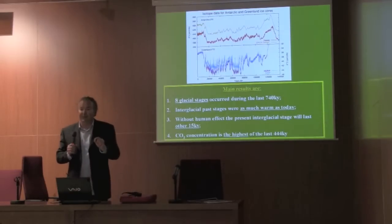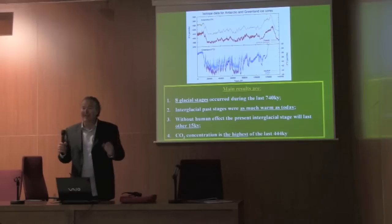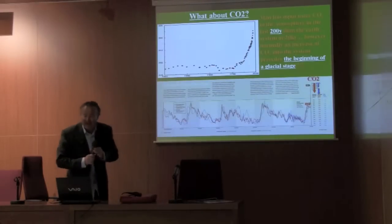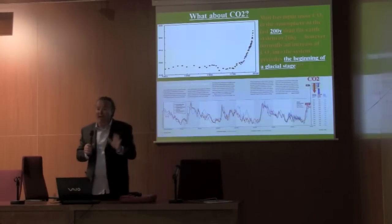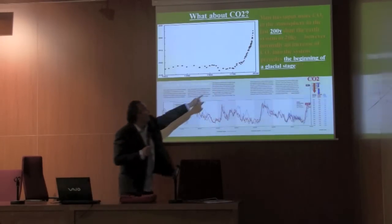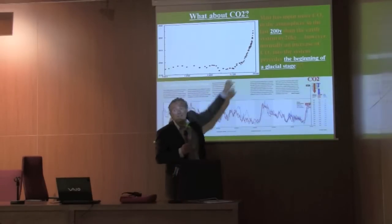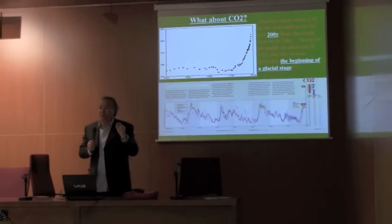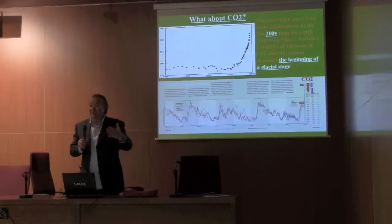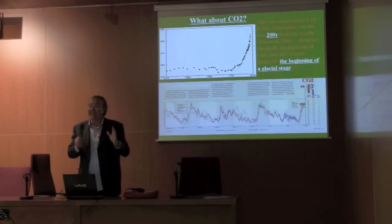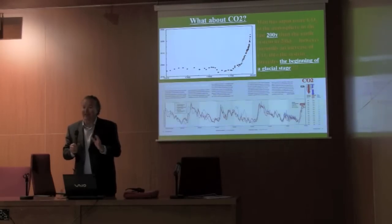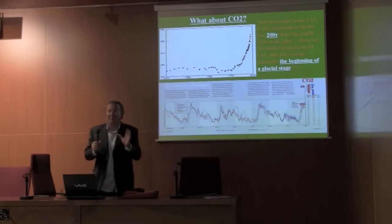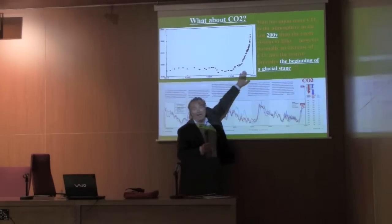CO2 in the atmosphere, due to the use of hydrocarbons in the last 200 years — so from the Industrial Revolution to now — has increased enormously. The amount of CO2 released into the atmosphere equals what the Earth normally releases through natural processes in 200,000 years. So we did in 200 years what the Earth normally does in 200,000. And this is extremely important because we can observe this change within our own timeframe.